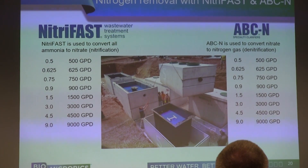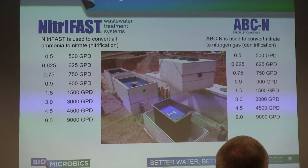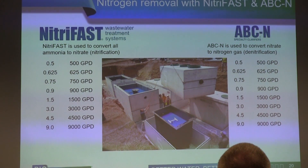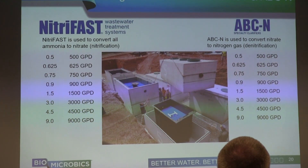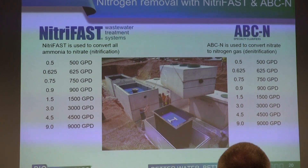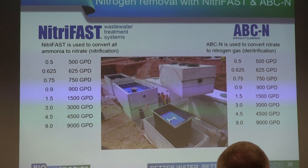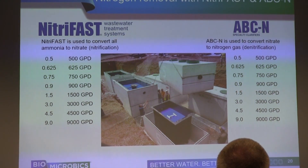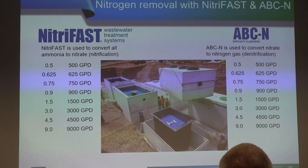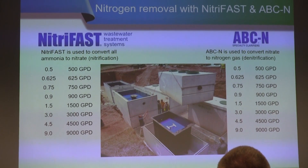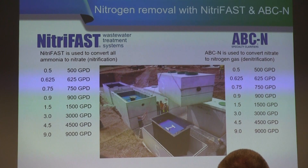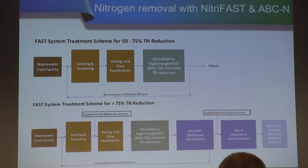The model sizes for NitroFAST and ABCN match up with the model sizes for Micro FAST and high-strength FAST — roughly speaking, they're rated for the same gallons per day. However, we size each one based on a number of factors, which is why we want to work with you to select them. We'll need to know the climate, estimated wastewater temperature, and the influent and effluent estimates for nitrogen to properly select the combination of systems.